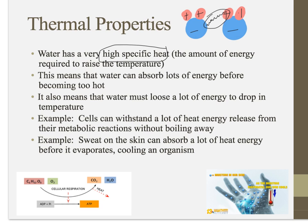Water can absorb lots of heat energy before it becomes too hot, and it also takes a long time for that water to cool down. When your cells undergo metabolic reactions, heat is often a byproduct. Looking at cellular respiration — where we take glucose and in the presence of oxygen dismantle it, taking apart those chemical bonds, turning that into carbon dioxide and water — we use some of the energy from those bonds to generate ATP. That process is not 100% efficient and also releases heat.